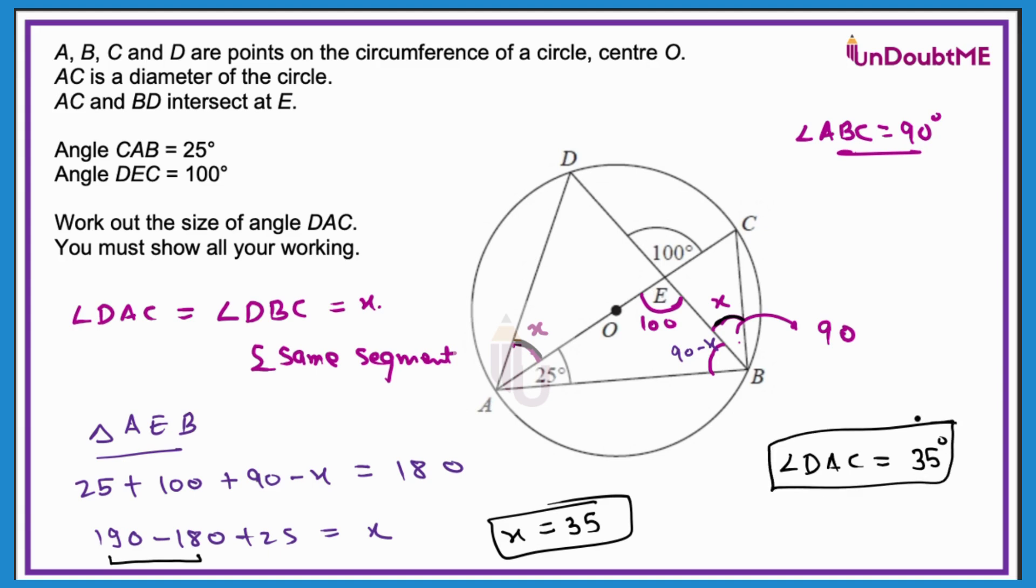If you want, you can watch this video one more time. In this video we have dealt with two circle theorems: one is angles in the same segment are equal and angle in a semicircle is 90 degrees. Other than that, we use the concept of vertically opposite angles where we got the other angle also as 100 degrees.